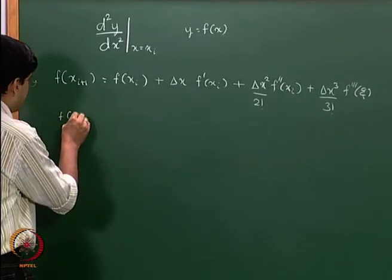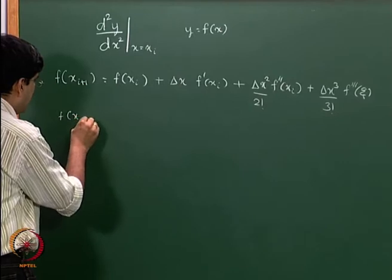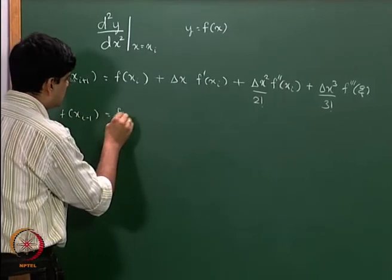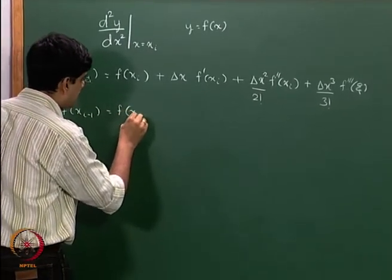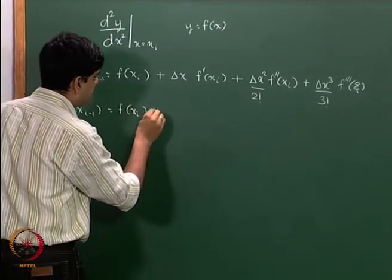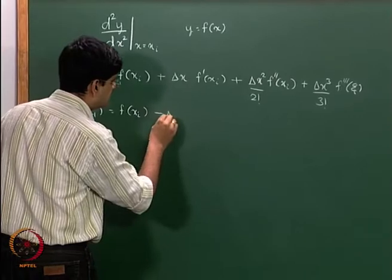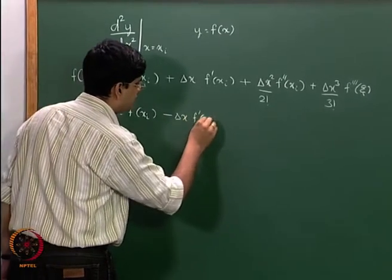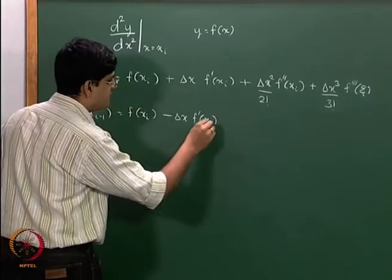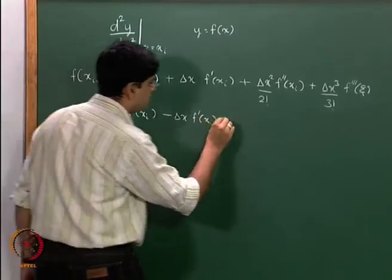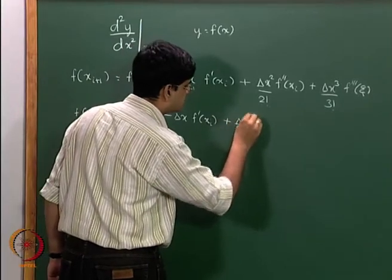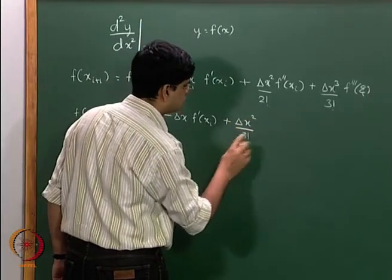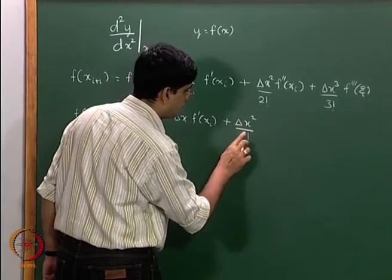Likewise, we will expand f(x(i-1)), and that is going to be f(x(i)) minus delta x times f'(x(i)), plus delta x squared by 2 factorial times f double dash of x(i), and further terms.